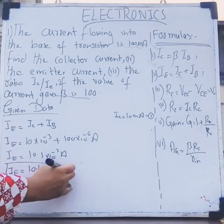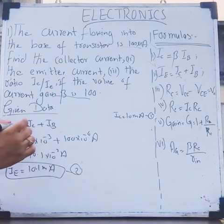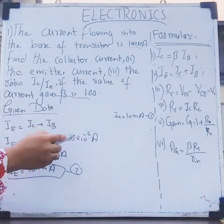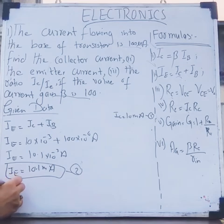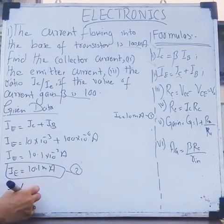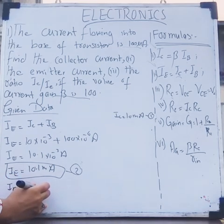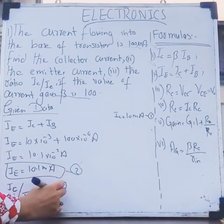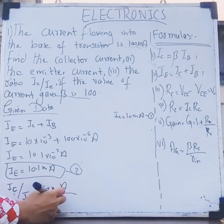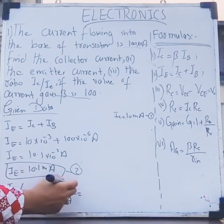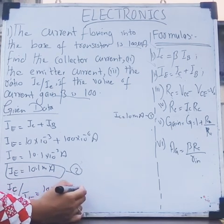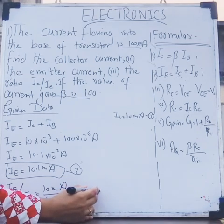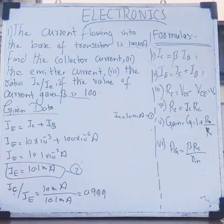For the ratio, simply divide Ic by Ie. This is my equation number one and this is my equation number two. So Ic divided by Ie equals 10 milliamperes divided by 10.1 milliamperes. After simplification, I get 0.999. That is the collector to emitter ratio.